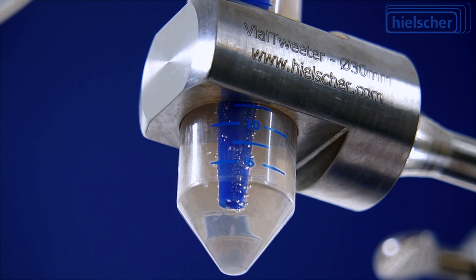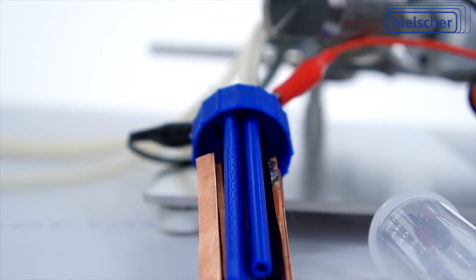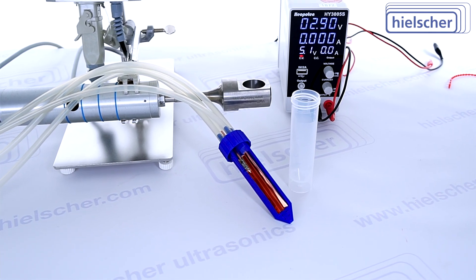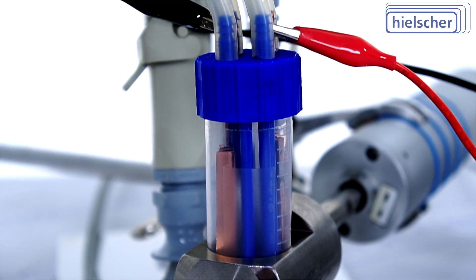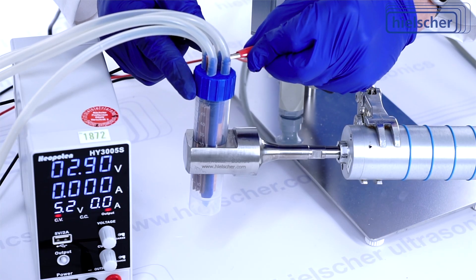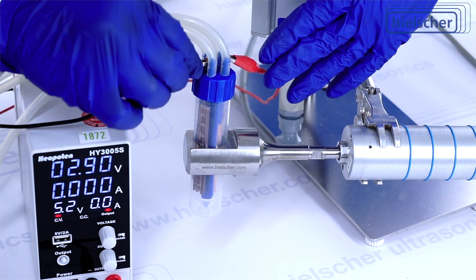When used with a specialized electrochemical cell lid, the falcon tube becomes an innovative sono-electrochemical cell with ports for electrodes, gas discharge, and liquid recirculation. By integrating sonication with electrochemical processes, the Vial Tweeter significantly improves reaction kinetics.